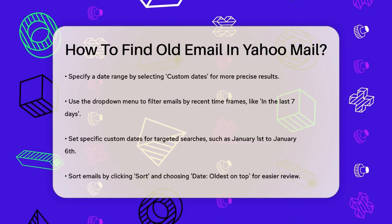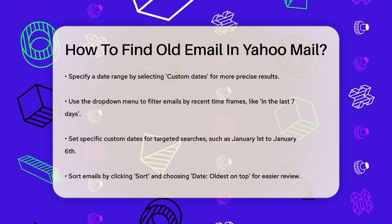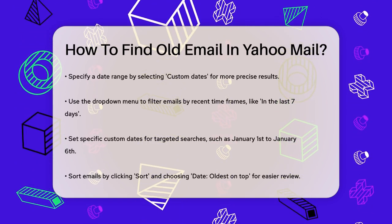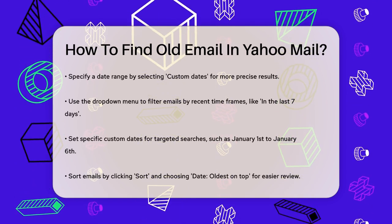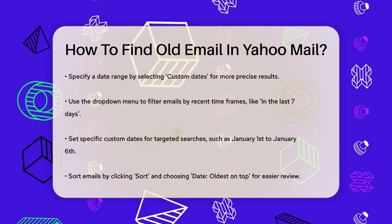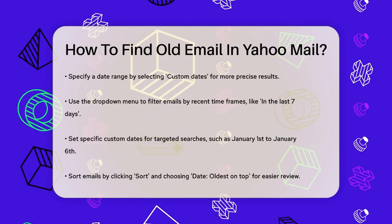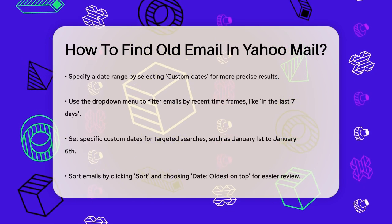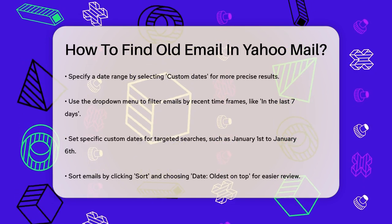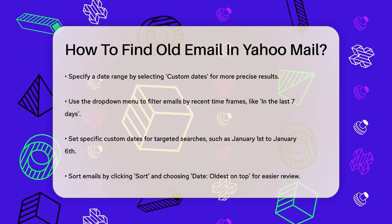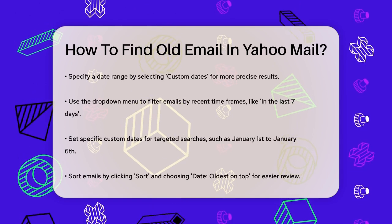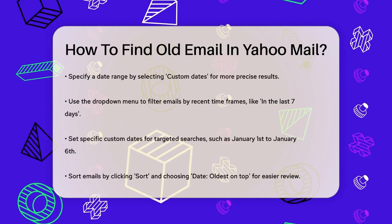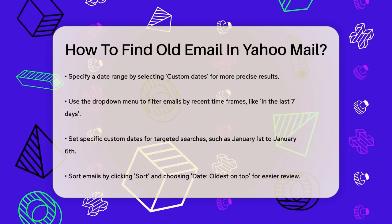For example, if you're looking for emails from last week, you can select 'In the last seven days' from the drop-down menu next to date. If you need a specific date range, like emails from January 1st to January 6th, you can set those custom dates and click Search. This will filter your emails to show only those received within that timeframe.